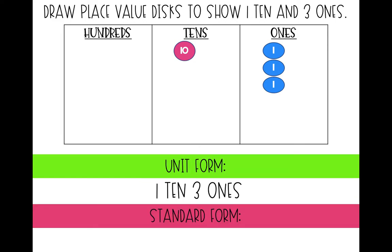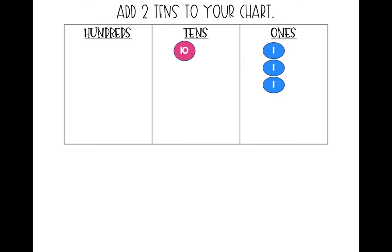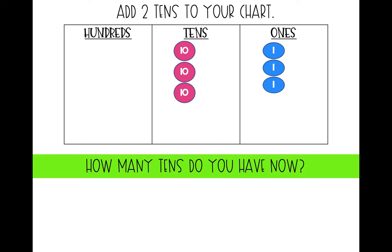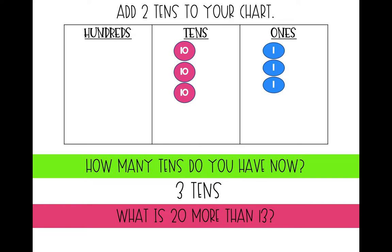What is that number in standard form? Very good — 13. I want you to add two tens to your chart. Go ahead and draw those now. How many tens do we have now? We have three tens. Since we added 20 to 13, what did we find was 20 more than 13? Look at our place value chart if you need some help. 20 more than 13 is 33. We had 13, drew two more tens, which is 20 more, which gave us 33.